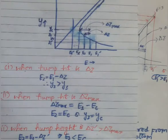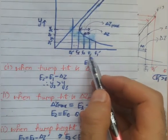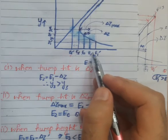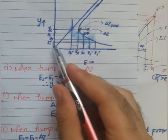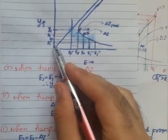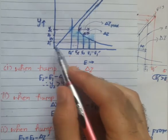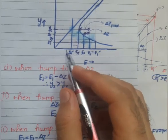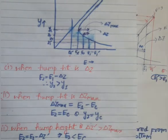We can observe that when we increase the specific energy at section 1 to e1-dash, the corresponding depth at section 1 decreases from y1 to y1-dash. This condition occurs when the hump height exceeds ΔZ_max.